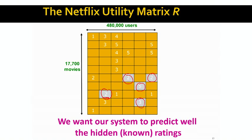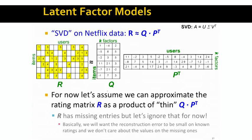How do we approach the rating prediction problem? The way we will approach this is through matrix factorization. This is why these models are called latent factor models — because we basically factorize the matrix. In some sense, we will be applying singular value decomposition, or a version of it, to the Netflix utility matrix.